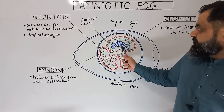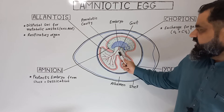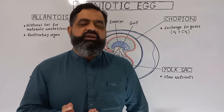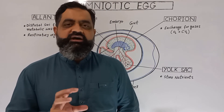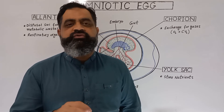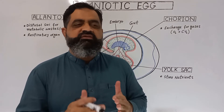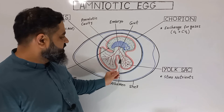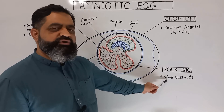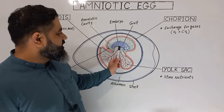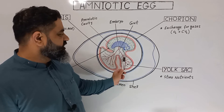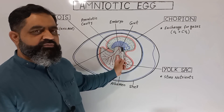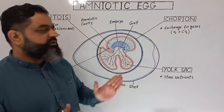Just beneath the embryo there is a gut, which leads into a sac known as the yolk sac. Reptiles, birds, and some mammals lay larger eggs with a large amount of stored food for the developing embryo, which is necessary for development in terrestrial conditions. The yolk sac stores nutrients, and blood capillaries spread over it to absorb nutrients and deliver them to the developing embryo, where all development completes.